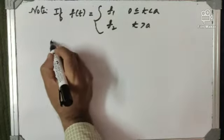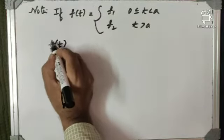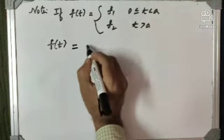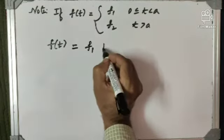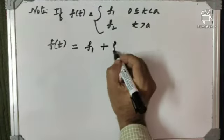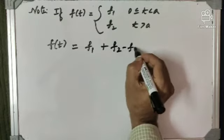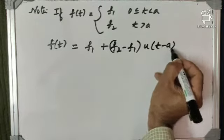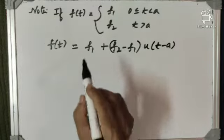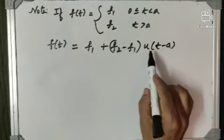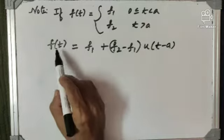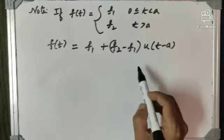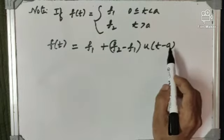Now, f of t can be written as f of t is equal to the first function f1 plus the difference f2 minus f1 into u of t minus a. This is the way to write the function f of t in terms of unit step function.